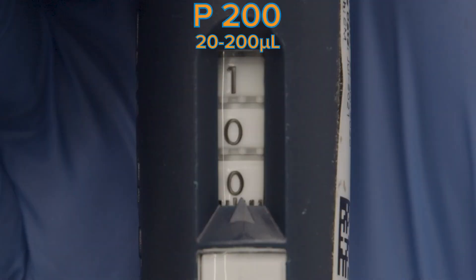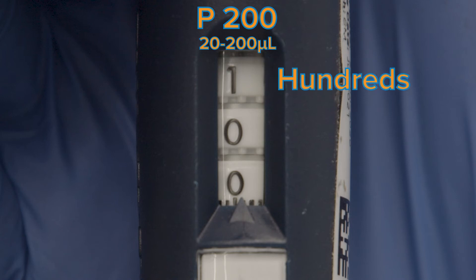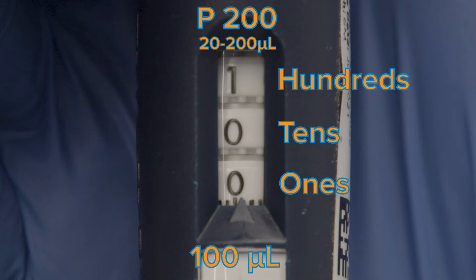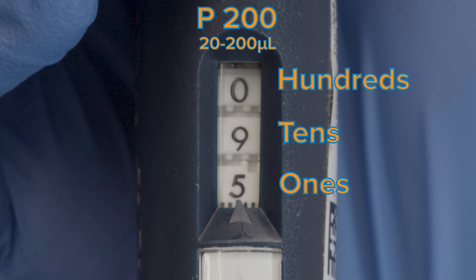For the P200, the first digit is hundreds, the second is tens, and the third ones. So, 100 from top to bottom would be 100 microliters, while 095 from top to bottom would be 95 microliters.